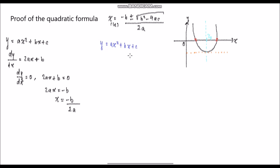Because we have two degrees of x — x squared and x — I can't just make x the subject, because there would still be an x on the other side. So in order to avoid this problem, we use the completing the square method. What we're going to do is factor out a from all terms: y = a(x² + (b/a)x + c/a).